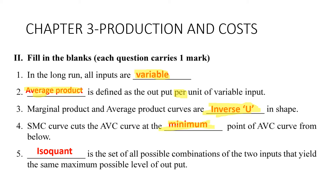Fifth: an isoquant is a set of all possible combinations of two inputs that yield the same maximum possible level of output. Now moving to chapter four: theory of the firm under perfect competition.